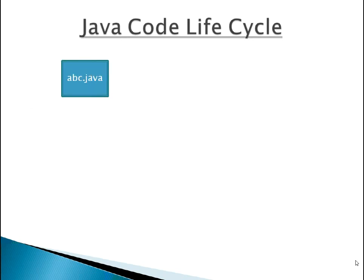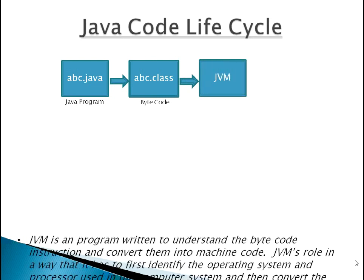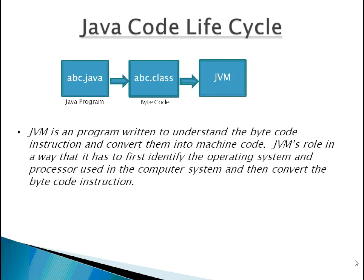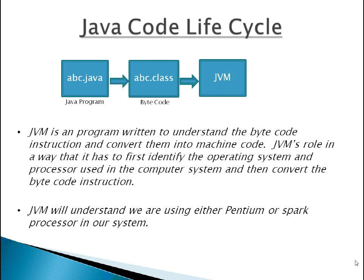If we create a Java program, say abc.java, which contains Java source code statements, then the Java compiler will compile this program and translate abc.java into abc.class file, which contains bytecode. But the microprocessor of a computer cannot understand or execute these bytecode instructions. So these bytecode instructions are understandable by the Java Virtual Machine. JVM is a program written to understand the bytecode instructions and convert them into machine code. JVM identifies the operating system and processor used in the computer system, then converts the bytecode instructions into an understandable format for that particular processor and operating system — whether we are using a Pentium or SPARC processor. So it converts bytecode into machine code understandable by the respective processor, which then executes it and displays the result.